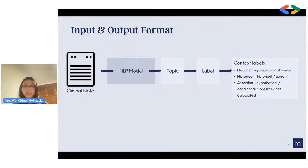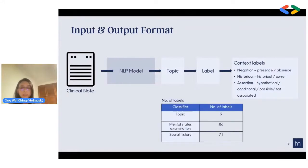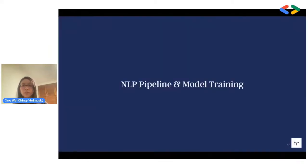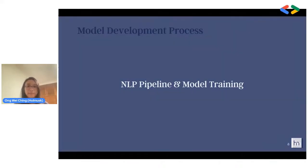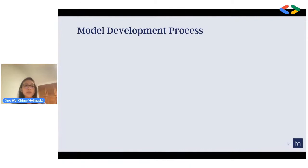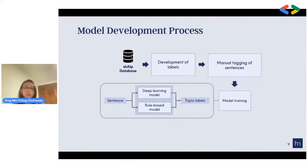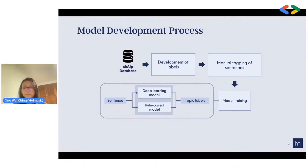The number of labels we are looking at includes 9 topics, 86 mental status examination (MSE) labels, and 71 social history labels. Moving on to the NLP pipeline and model training process — the whole model was developed by first getting data from the SHAPE database, developing a set of labels, and manually tagging sentences with those labels. Then we train the model: putting in a sentence, we use either a deep learning model or rule-based model and output topic labels for that sentence.